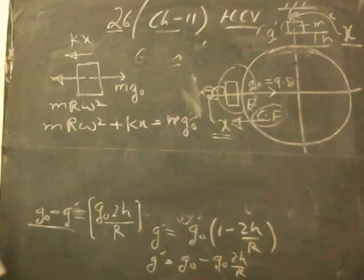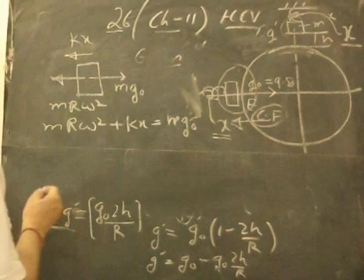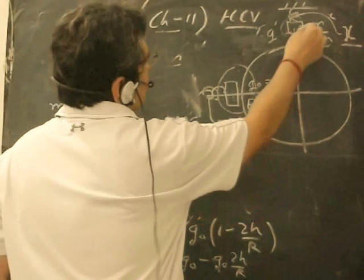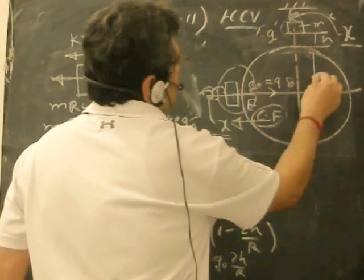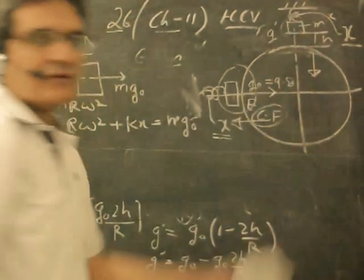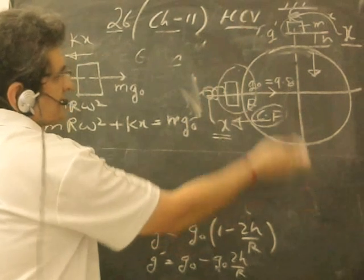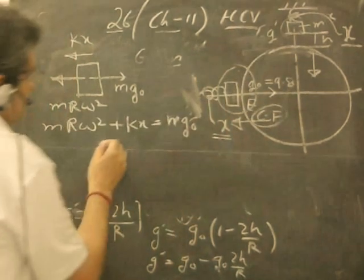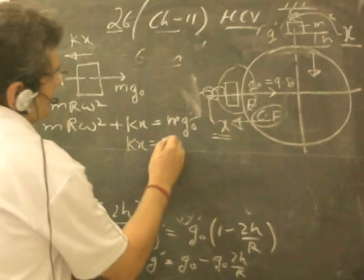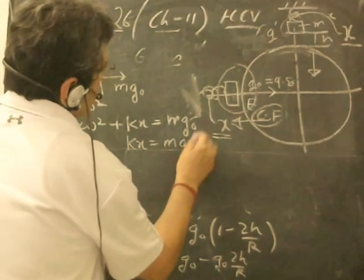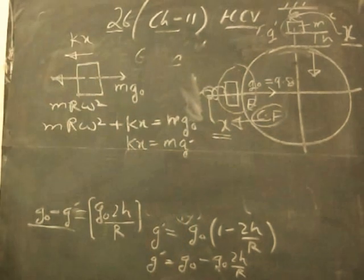In case of the pole, it is very simple. There is no other force, only mg' in this direction and kx in the upward direction. So kx in the upward direction, mg' in the downward direction, and it is in equilibrium. So kx = mg', and this is mg₀.